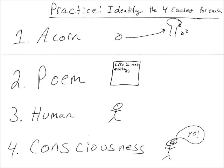Let's look at the second one — a non-living thing again — and this is a poem. The material cause is the paper and the ink. The efficient cause is the pencil and the poet. The formal cause, perhaps, is an expression of an idea or feeling. And the final cause is to inspire, to reflect, and so on.